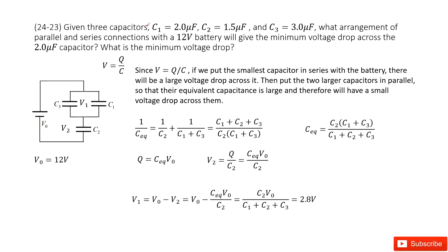We have C1, C2, C3 — three capacitors. We need to make the two micro-farad capacitor's voltage drop minimum. Since C1 is the two micro-farad capacitor, we need to minimize C1's voltage drop. To do that, we must make the equivalent capacitance maximum, because if voltage is minimum, capacitance must be maximum since the charge is fixed.